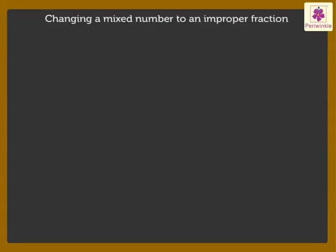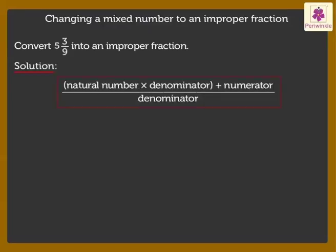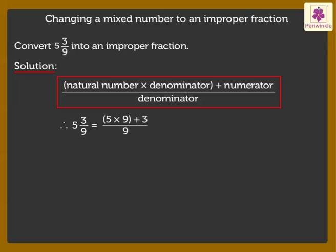Now let us change a mixed number to an improper fraction. Convert 5 and 3 upon 9 into an improper fraction. Multiply the natural number by the denominator, then add the numerator to the product to get the new numerator. Write the denominator as it is. Therefore, 5 and 3 upon 9 equals (5 × 9) + 3 upon 9, which equals 45 + 3 upon 9, that is 48 upon 9.